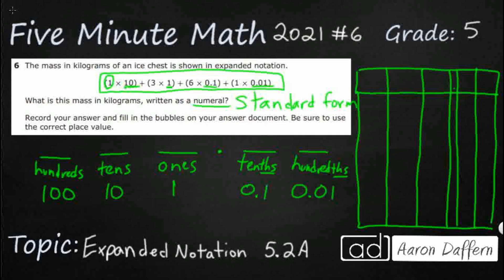One goes in the tens place, because it's one times ten. We've got a three in the ones place, because it's three times one. We've got a six in the tenths place, because it's six times 0.1. And we've got a one in the hundredths place, because it's one times 0.01. And so we have thirteen point sixty-one.